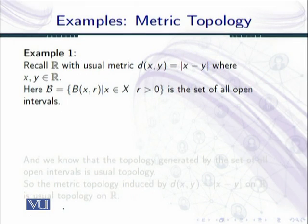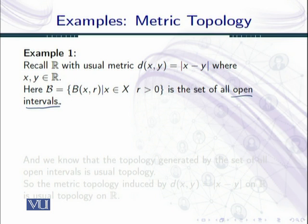Our first example is the real line with the usual metric that is defined by d(x, y) = |x - y| where x, y are real numbers. Now we have already seen what this collection B is. So B consists of the collection of all open balls in ℝ. Now basically B is the set of all open intervals.